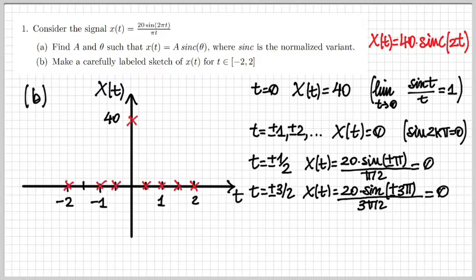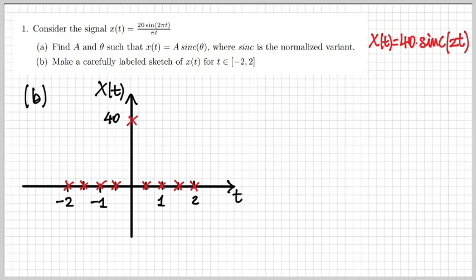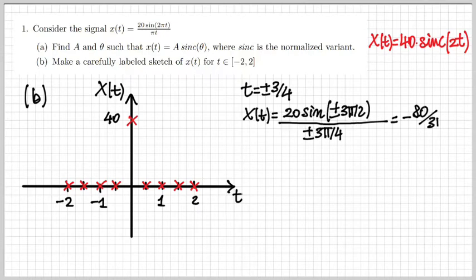We have collected quite a few points, and I'm drawing them on the left with red crosses. We know that the signal passes through those points at those particular values of t. We may want a few more points to draw the signal better, so I'll evaluate it at intermediate points. For t equal plus or minus 3/4, substituting into x of t gives minus 80 over 3π, which is roughly minus 8. I'm drawing that on the plot as well.